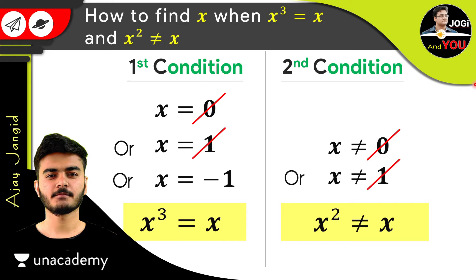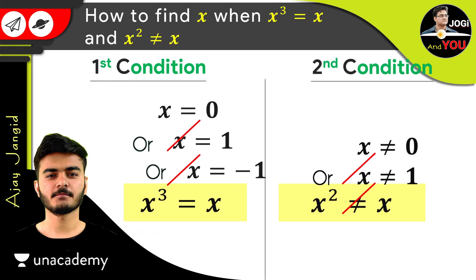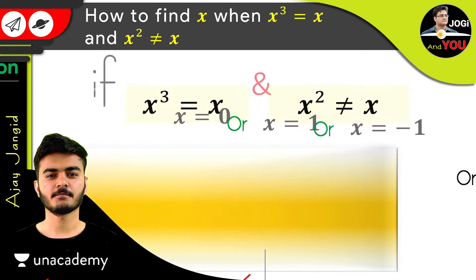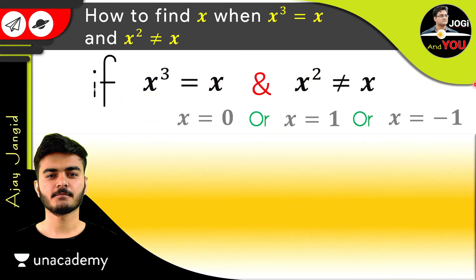So finally we have x is equal to minus 1 as our answer, but we have to cross-check it. Let's list all three candidate values: x = 0, x = 1, and x = -1.